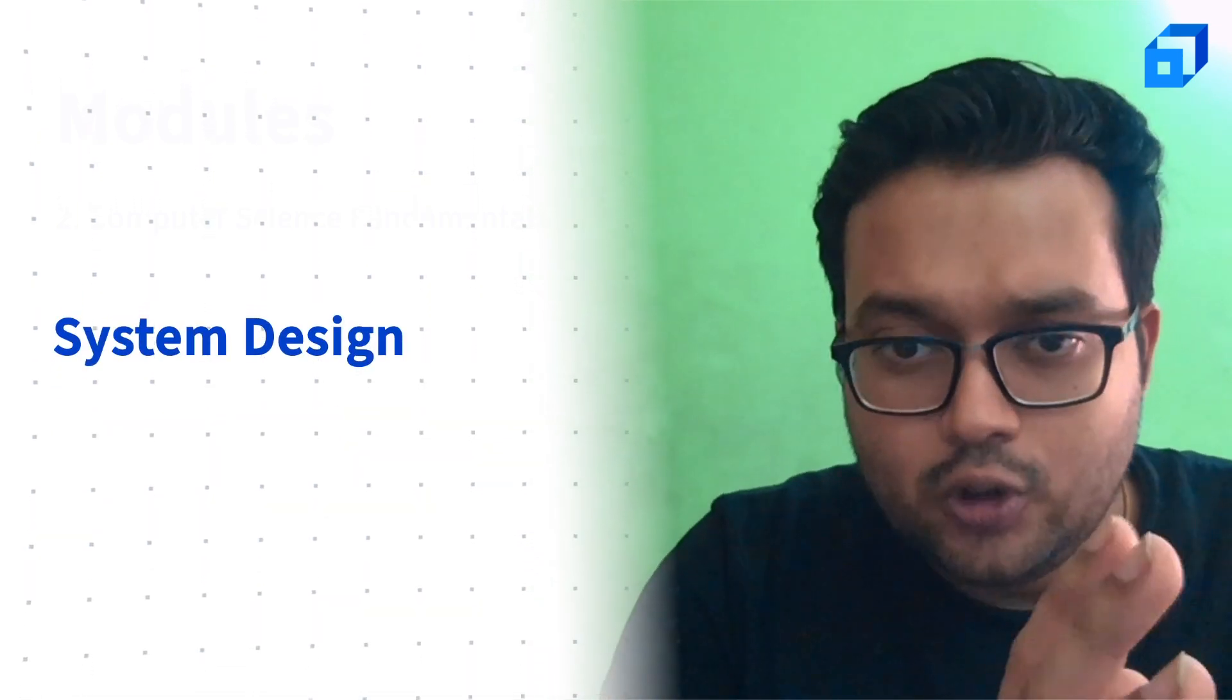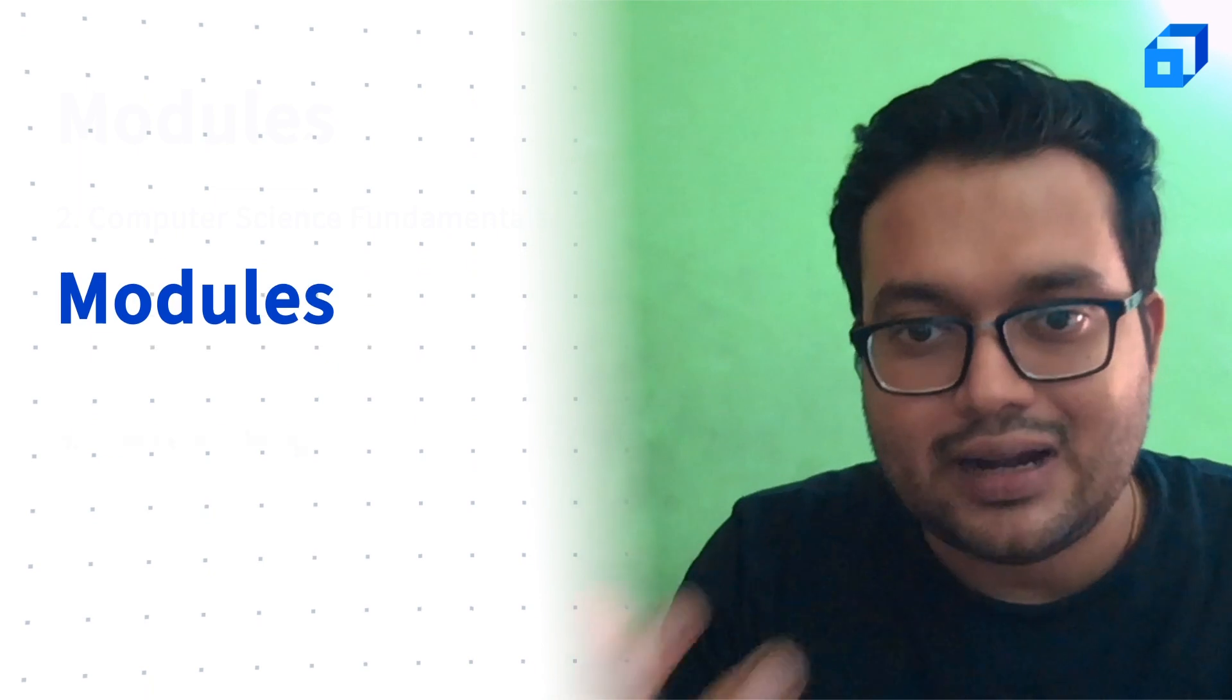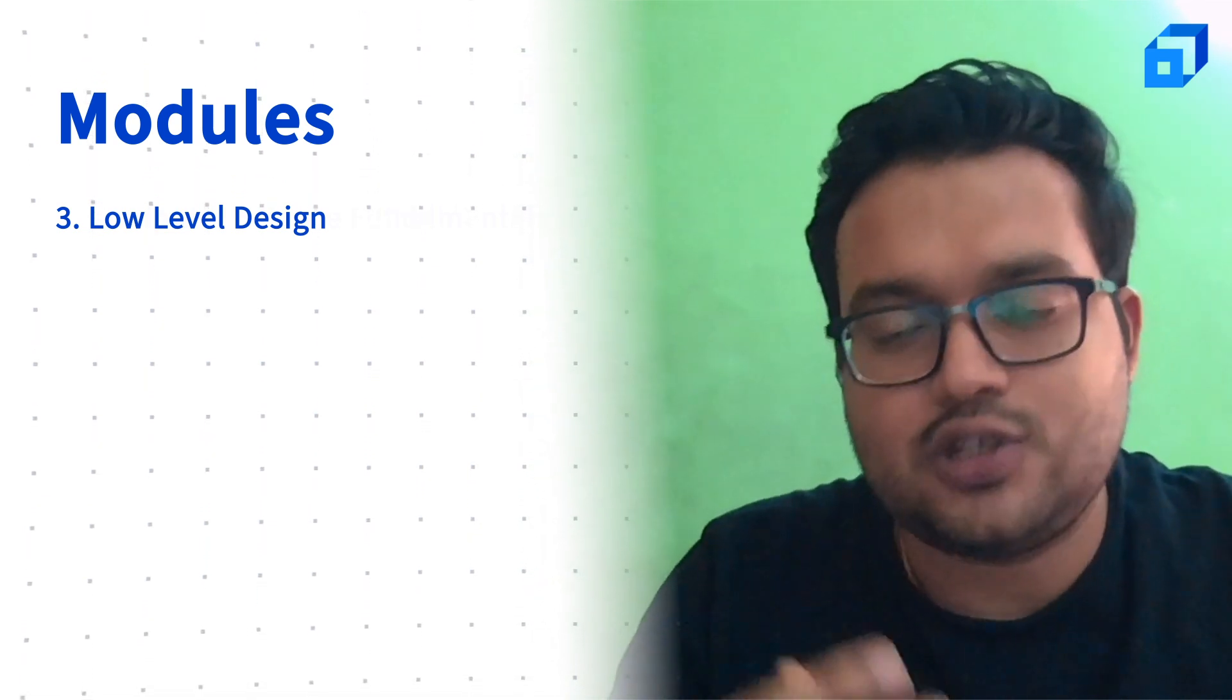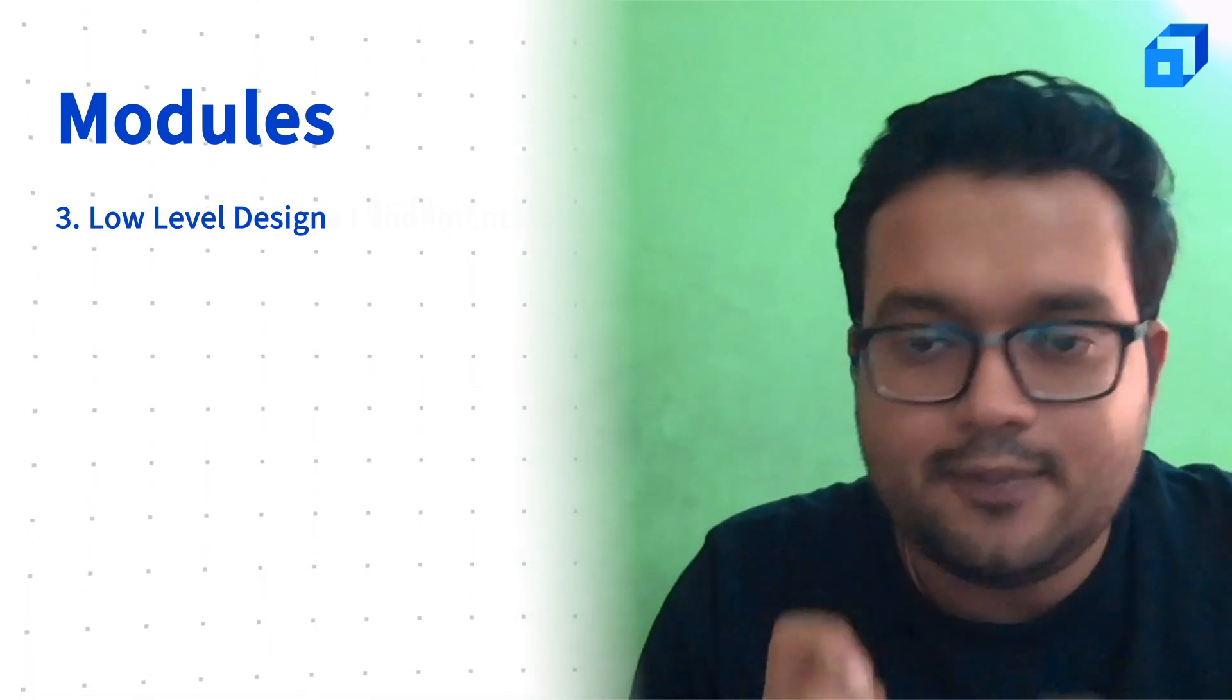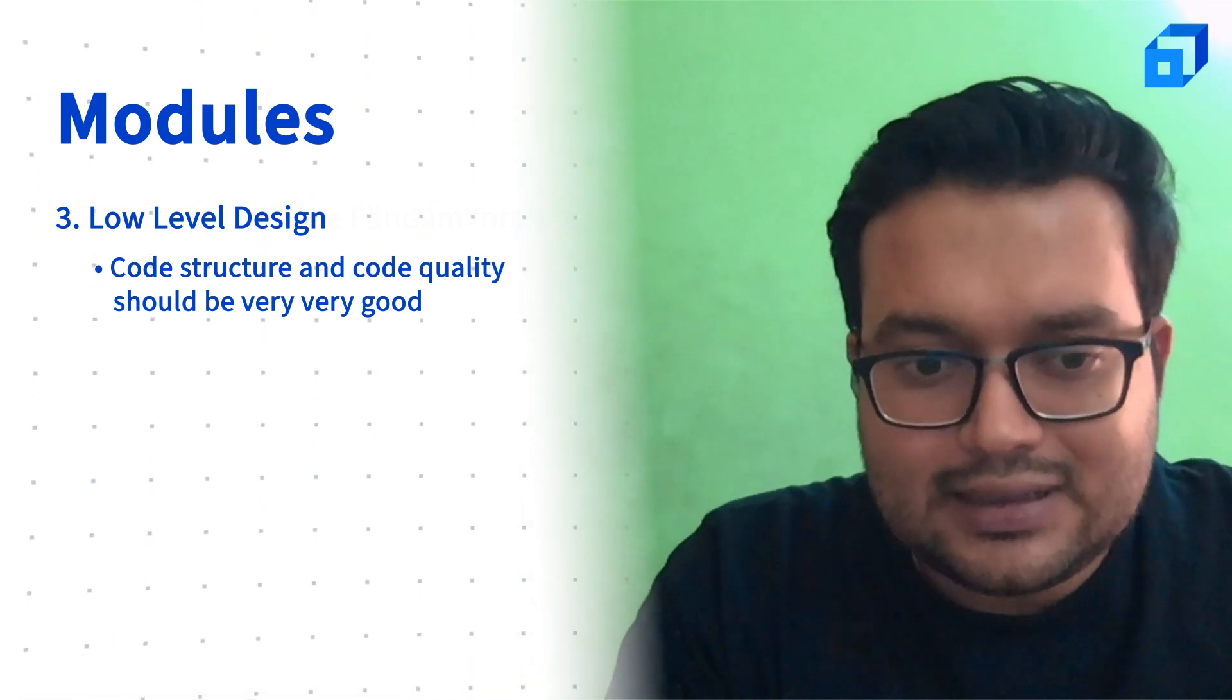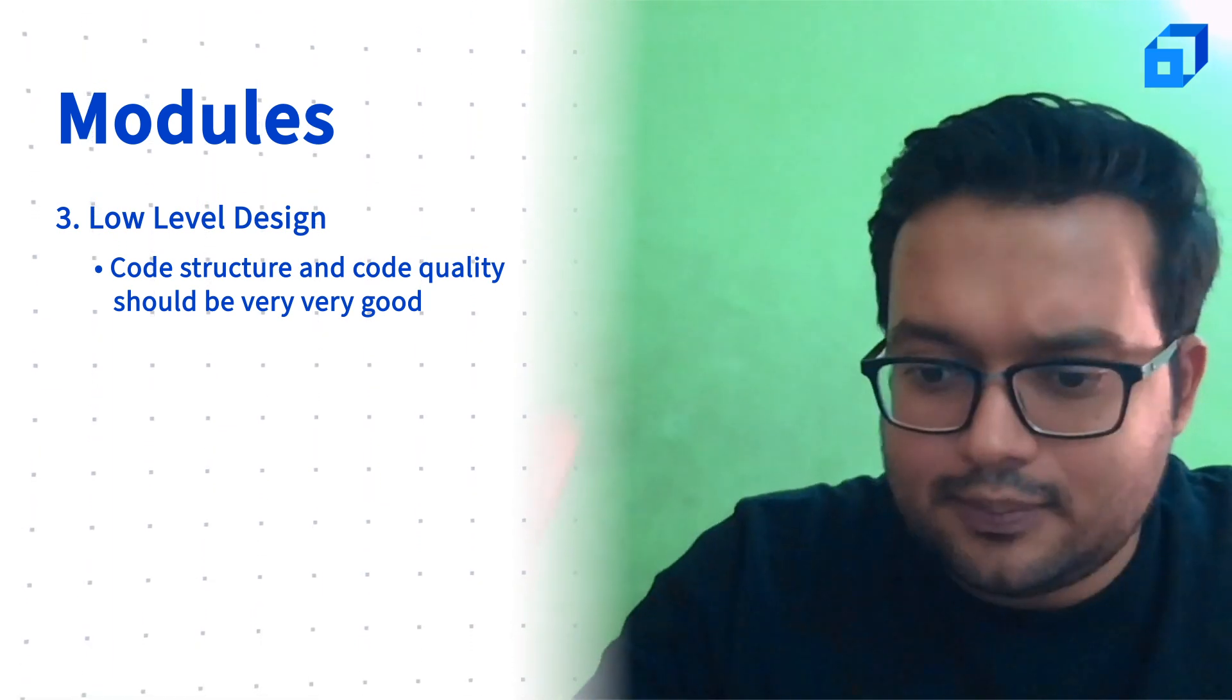After the modules on problem-solving and computer science fundamentals, we shift our focus towards system design. How do you build systems at scale? There are two components in system design. The first component is low level design, or how do you structure your code. For systems that scale, they seek constant iterations of feature additions and modifications. For a software system to support that, it's very important that the code structure and code quality is very good.